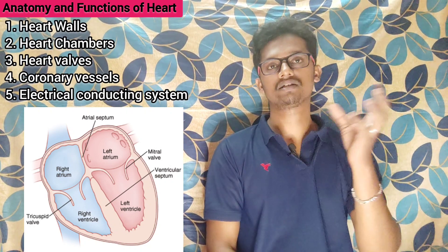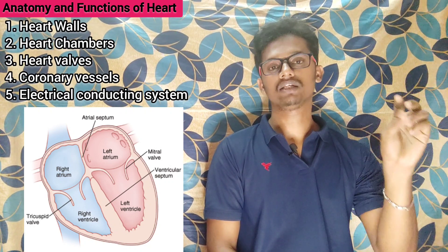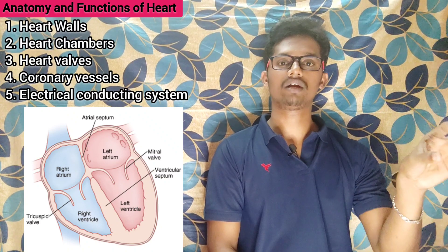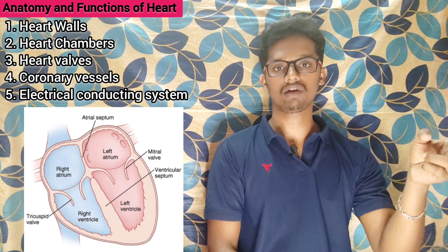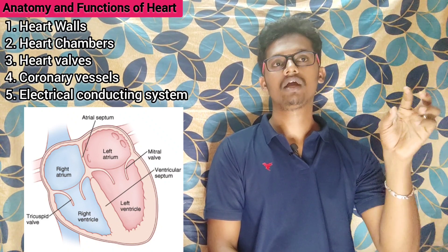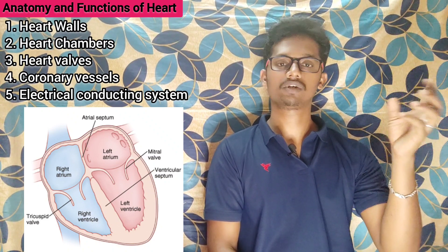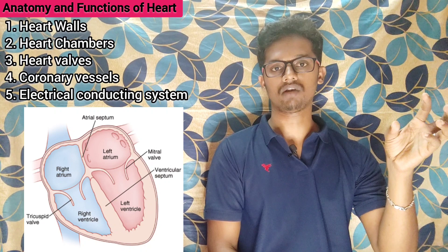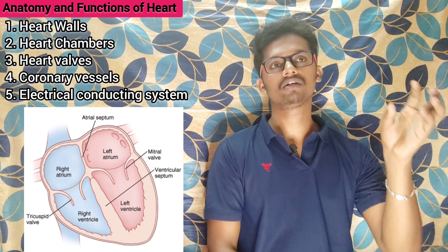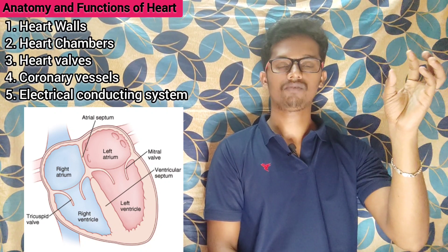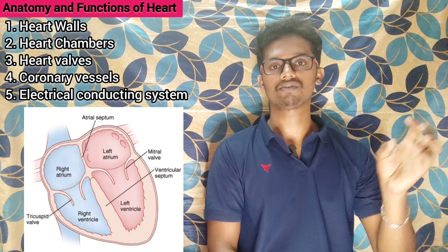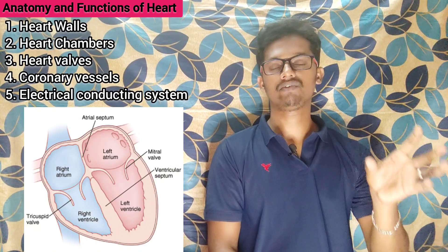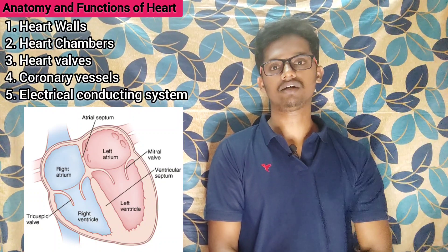The bicuspid valve, also called the mitral valve, is present between the left atrium and left ventricle. These two are the major valves of the heart.